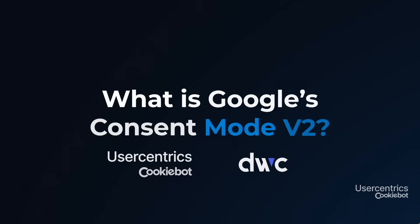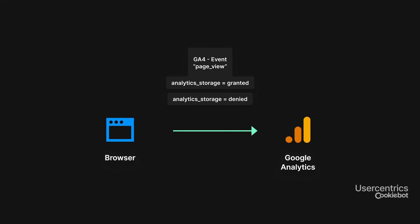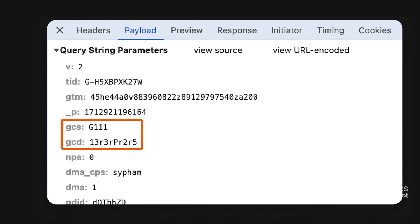Here are the basics you need to know. What is Google Consent Mode Version 2? The Consent Mode is a Google technology that enables information about current user consent status to be transmitted to Google, along with the collected tracking data. The consent signal is sent by the CMP to the tracking tool, which then sends it to the Google servers. The consent status is added to each tracked event, like page views, clicks or purchases, together with the consent parameters.